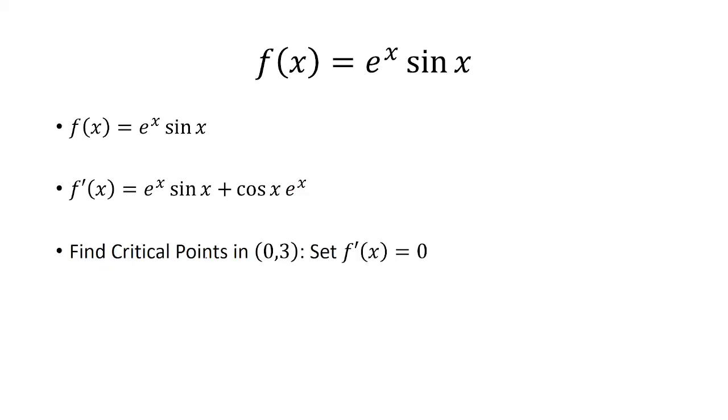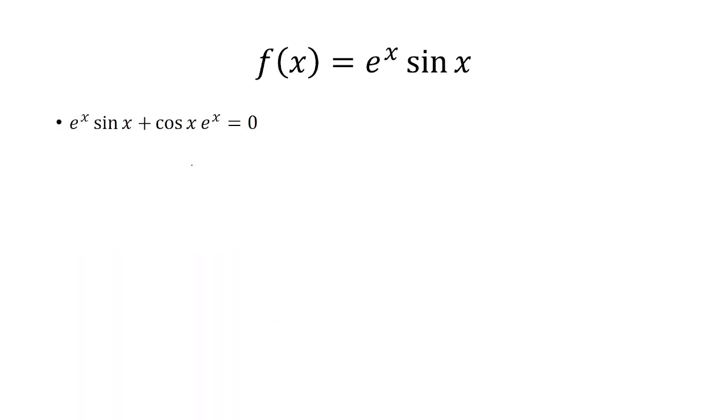We want to find the critical points in the open interval from 0 to 3, so we set the derivative equal to 0. Notice that I can factor out an e to the x, and I'm left with sine of x plus cosine of x. e to the x is never equal to 0, so I can divide both sides by e to the x.